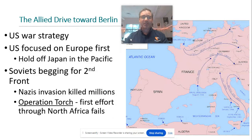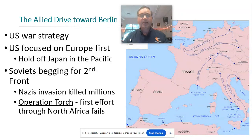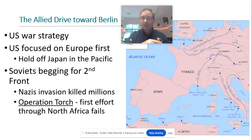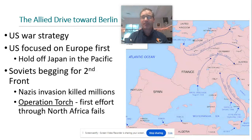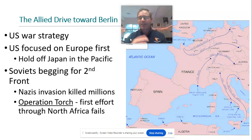Let's talk about the actual fighting in World War II. Let's start in Europe because, according to the Atlantic Charter, which we talked about last time, the United States paired with Britain, France, and then the Soviet Union. Under the Atlantic Charter, they agreed that Hitler was the bigger threat, and even though there was the bombing at Pearl Harbor, the United States would focus on Europe first. They're going to hold off in the Pacific and focus on Europe.